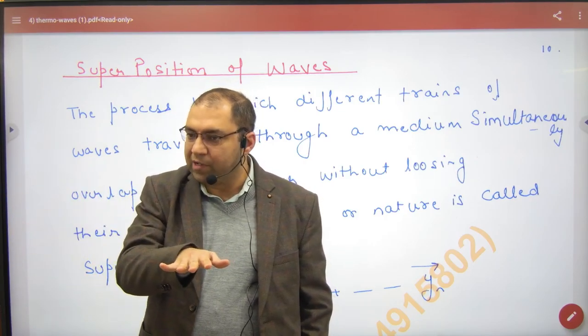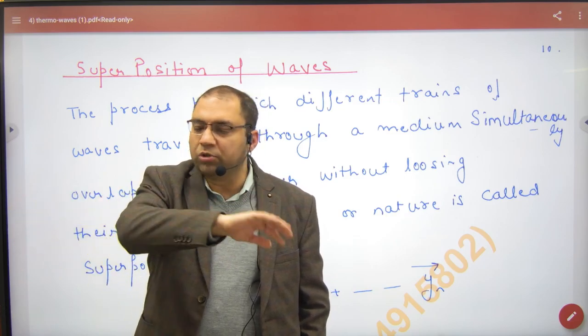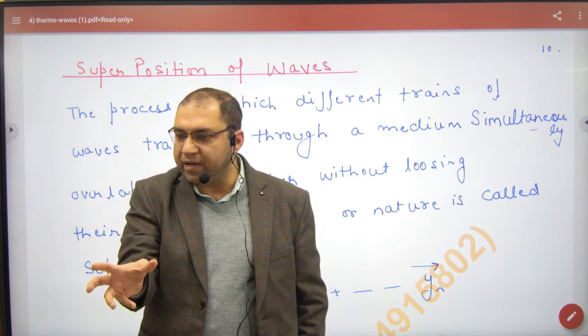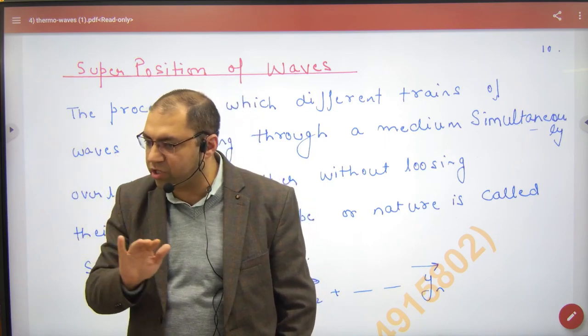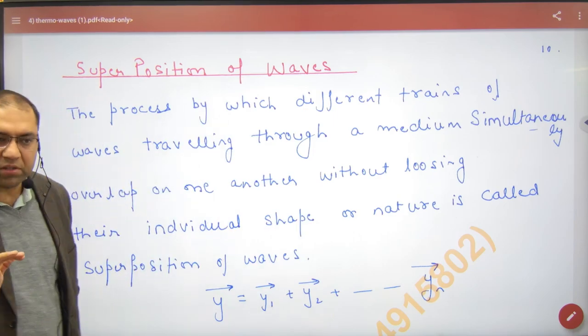...in the crest or trough form. So it is a sinusoidal wave. The other is a sinusoidal wave. When we add them, it will also be a sinusoidal wave. It will not be a straight line. The shape will not change - the shape will remain the same. So we call it superposition.